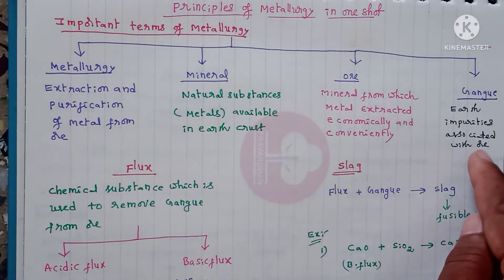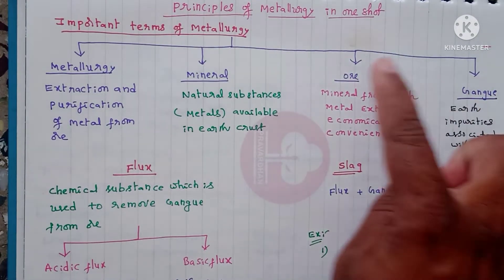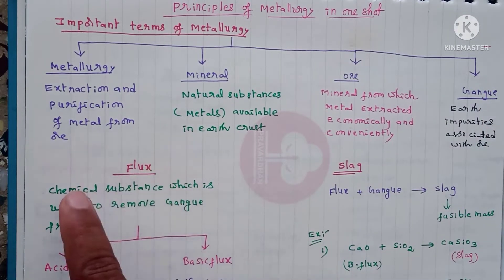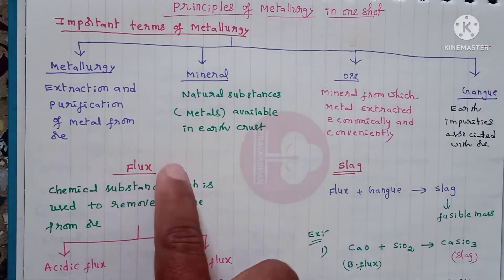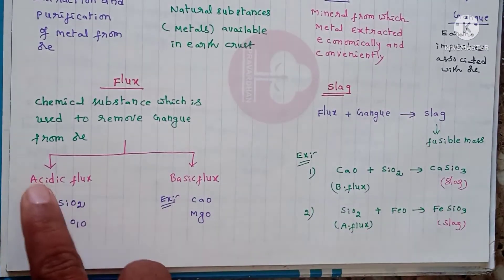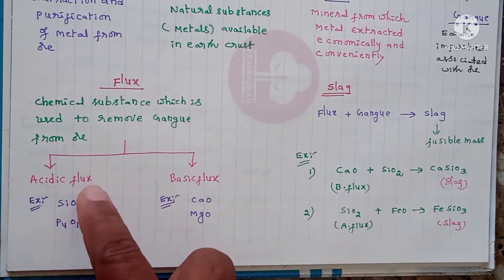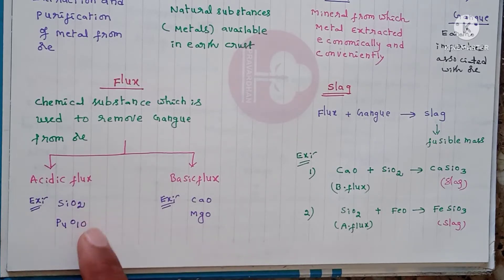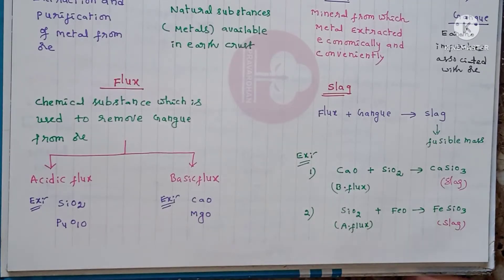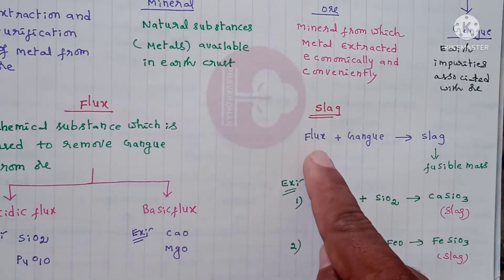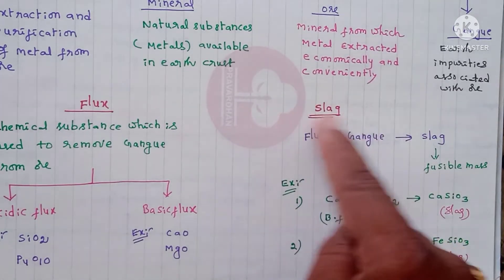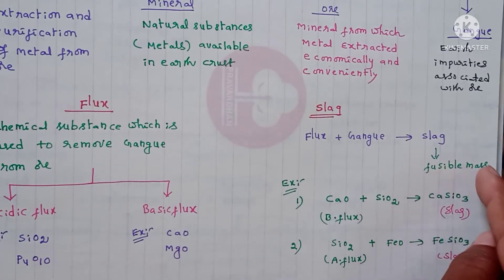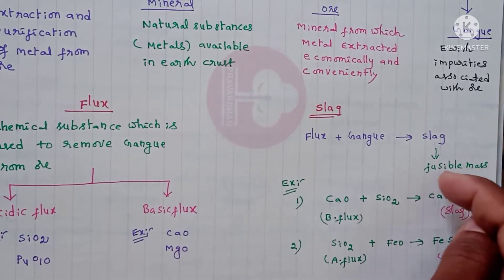Gangue refers to the earth impurities associated with ore. Flux is the chemical substance used to remove gangue particles from ore. Flux is of two types: acidic flux and basic flux. Acidic flux is acidic in nature and is used to remove basic gangue impurities. Basic flux is basic in nature and is used to remove acidic impurities. Slag is formed by the combination of flux interacting with gangue to form a single product.